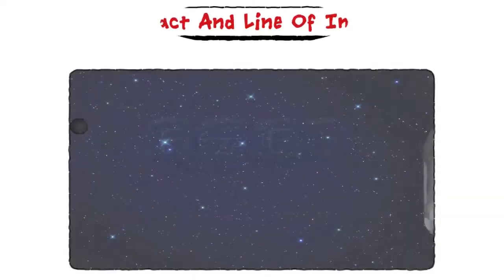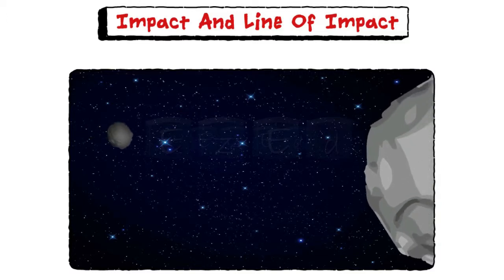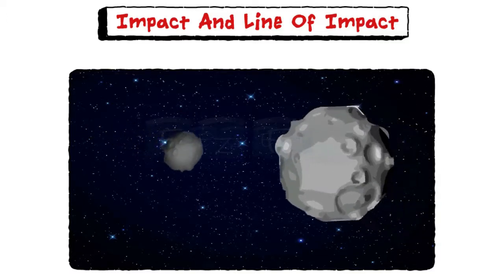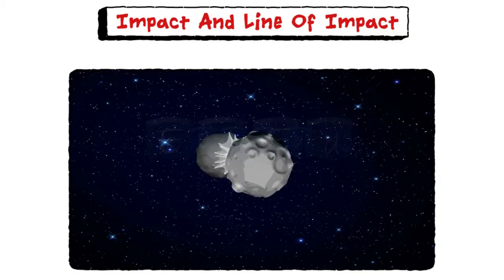Two meteors in space are on the verge of collision. When the collision of two meteors takes place during a very small interval of time, and during which the colliding meteors exert relatively larger force on each other, this is known as impact.